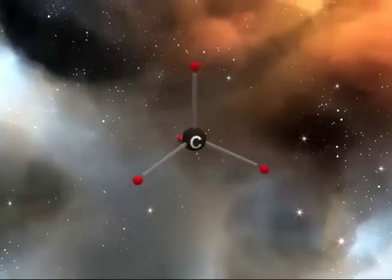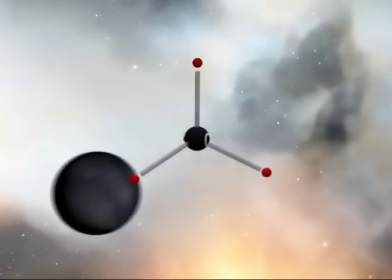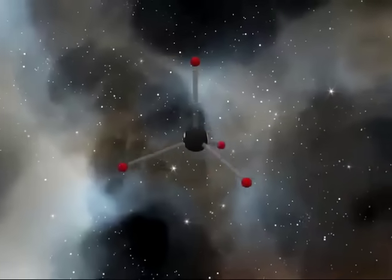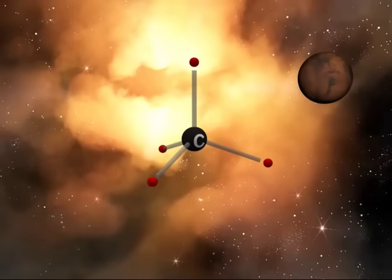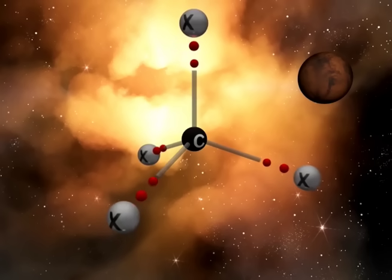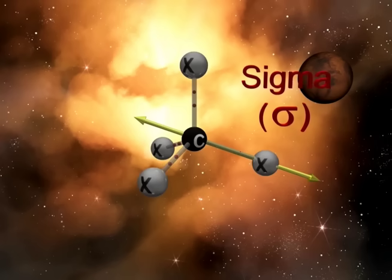Each of the four sp³ hybrid orbitals contains one electron capable of forming a covalent bond. The sp³ hybridized carbon is now capable of forming four covalent bonds. Here, X represents any atom with a valence electron capable of forming a covalent bond. Because the electron density is symmetrically located about an imaginary line that runs through the two adjacent nuclei, we call these bonds sigma bonds.